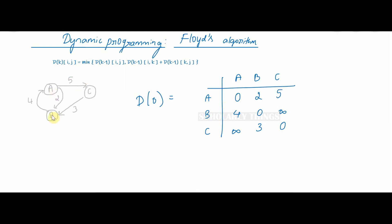b to a there is 4, b to b is 0, b to c there is no edge so it is infinity. c to a there is no edge so infinity, c to b there is 3, c to c there is 0.